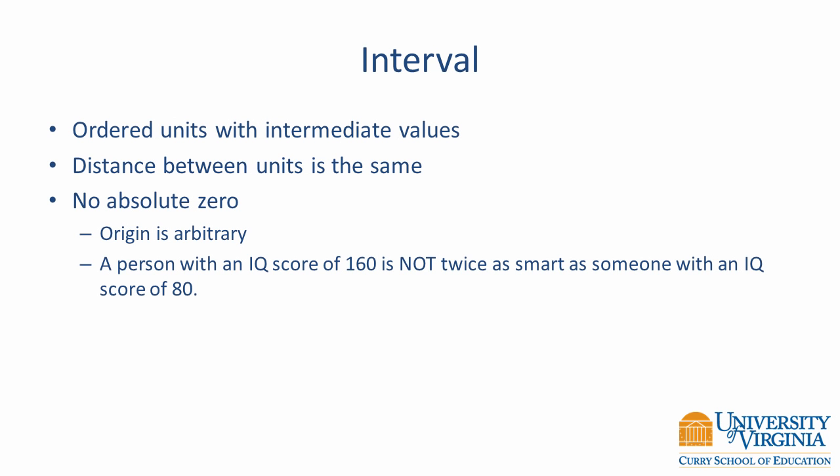Interval scales build upon an ordinal scale by having ordered units of the same size — that is, the distance between units is the same. The difference between 5 and 10 is the same as the distance between 20 and 25. Interval scales are commonly encountered in social science research; for example, test scales are commonly designed to represent an interval scale. However, they are limited by not having an absolute zero. A live person cannot have zero intelligence, and the origin of an intelligence scale could be 10 or 1,000. As a consequence, you cannot make statements such as a person with an IQ of 160 is twice as smart as someone with an IQ of 80.